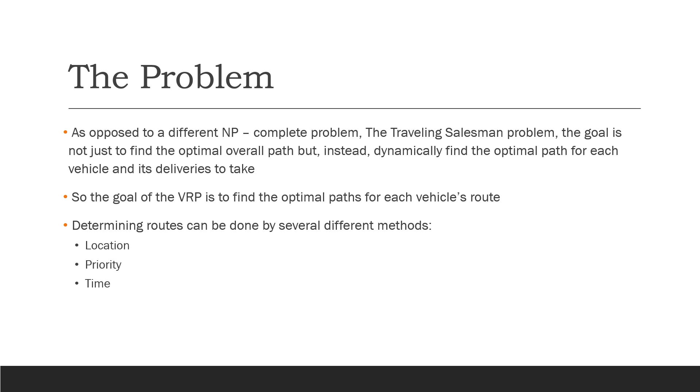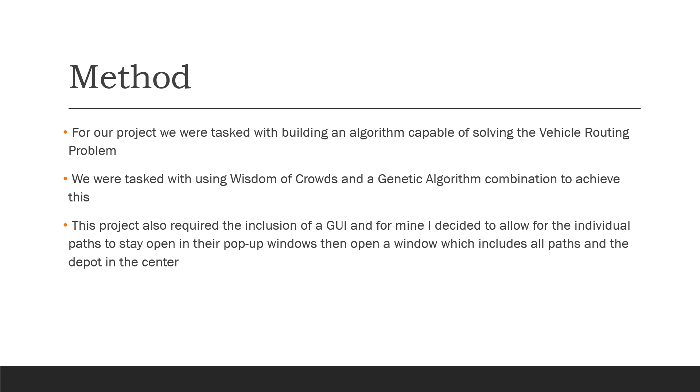The method for this project: we were tasked with building an algorithm capable of solving the vehicle routing problem using the wisdom of crowds and genetic algorithm combination from project five. This project also required the inclusion of a GUI. For mine, I decided to leave all individual paths visible and then have the overall vehicle routing problem solution come up at the end.